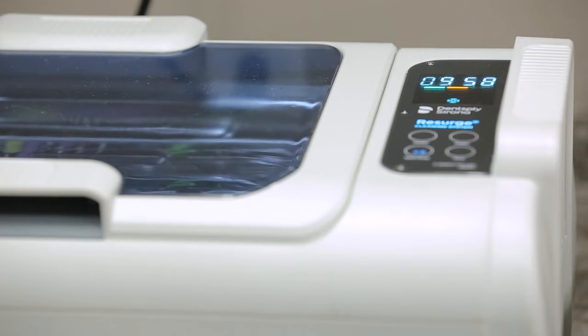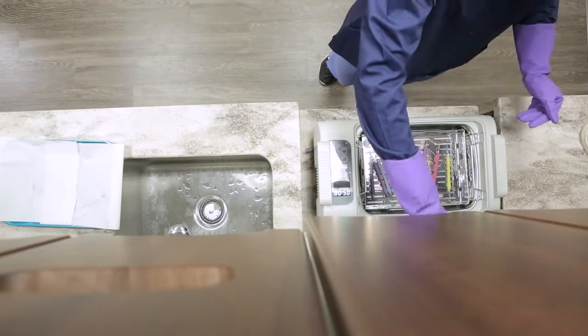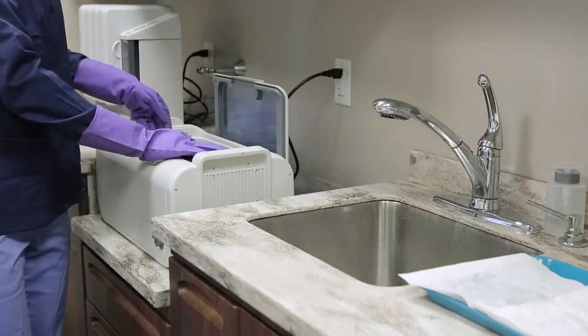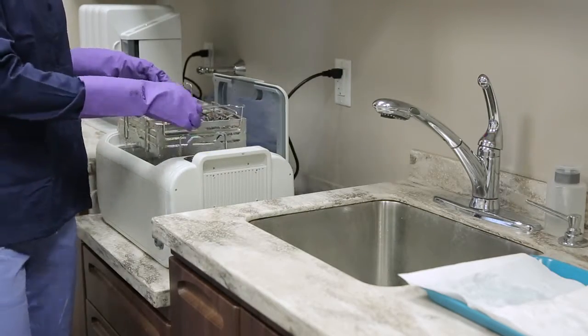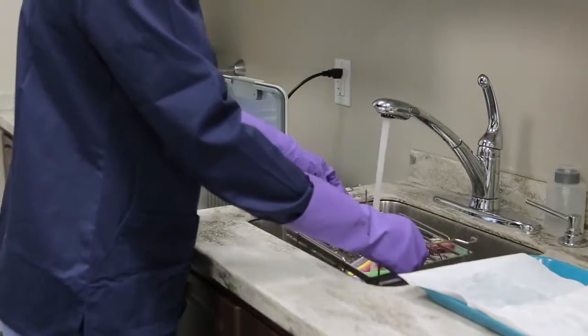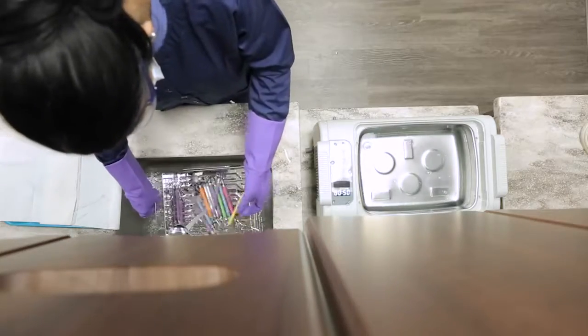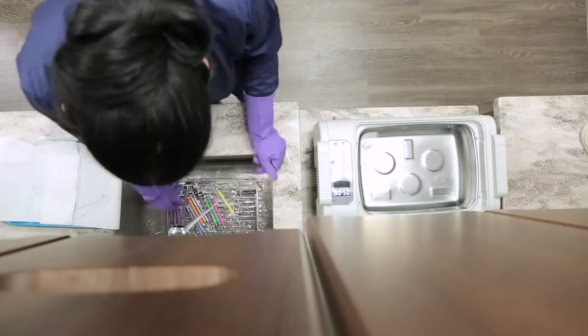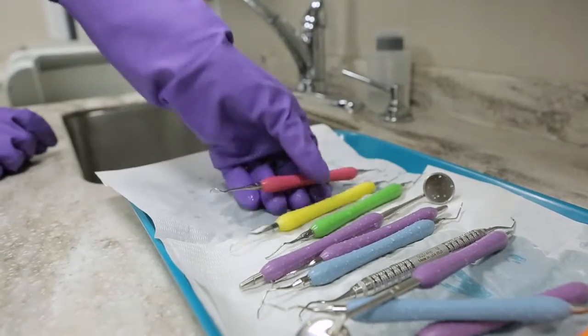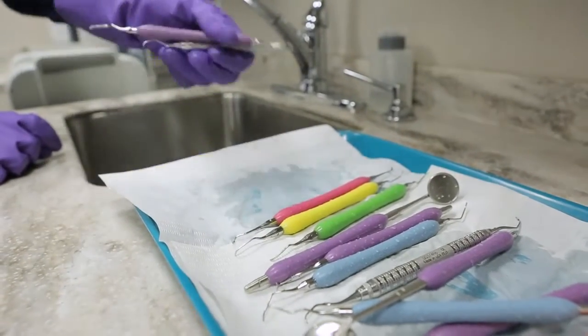Once the cycle ends, remove the lid and place it in the convenient holder on the back of the unit. Lift up the universal rack and allow excess liquid to drain off the instruments. Rinse the instruments to remove any residual instrument cleaner. Lay on towel to dry in preparation for autoclaving.